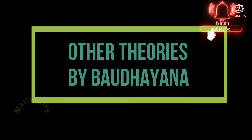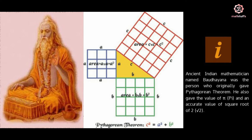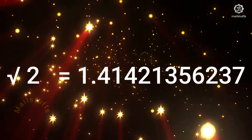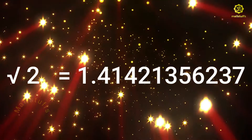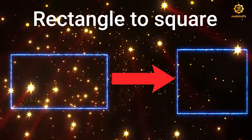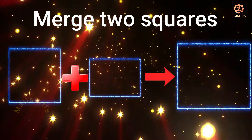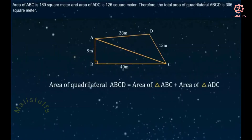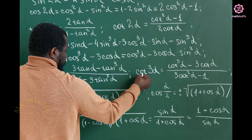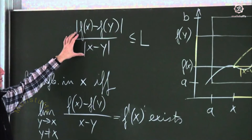Other theories by Bodhayana: Bodhayana is also known for calculating the value of pi up to some degree of precision. He is also credited with deriving the approximate value of the square root of two, circling of the square, transforming a rectangle into a square of the same area, merging two equal or unequal squares to create a third square, and computing the area of rectilinear shapes. Besides this, Bodhayana also made several other important discoveries, most of which are still used in advanced mathematics.